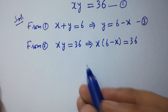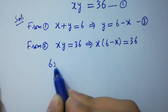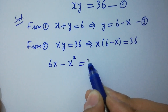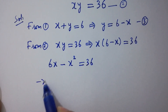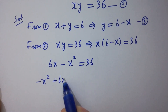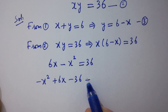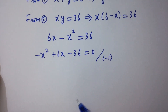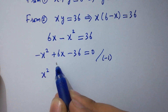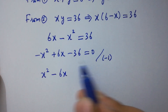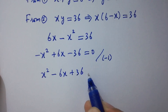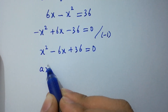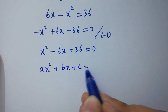Simplifying: 6x minus x squared equals 36. Rearranging gives minus x squared plus 6x minus 36 equals 0. Dividing both sides by minus 1, we get x squared minus 6x plus 36 equals 0, which is a quadratic equation of the form ax squared plus bx plus c equals 0.